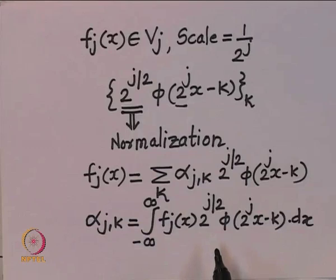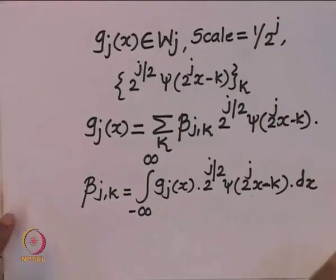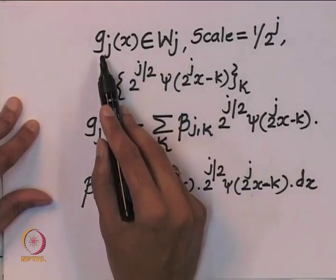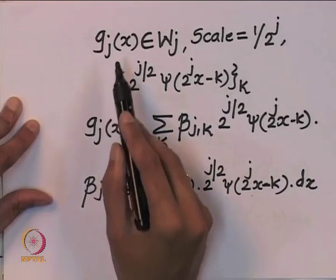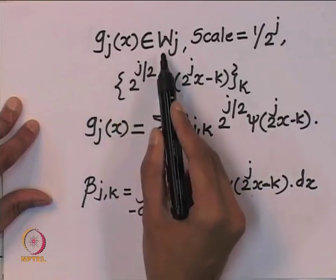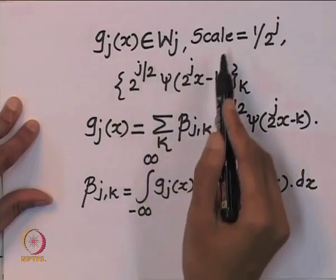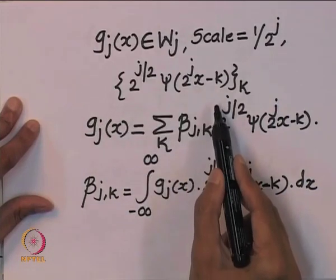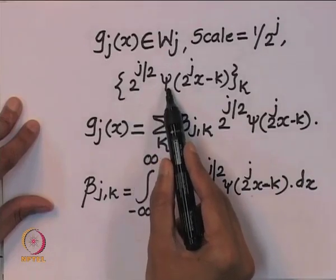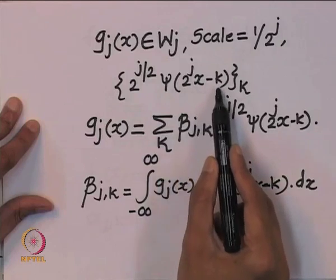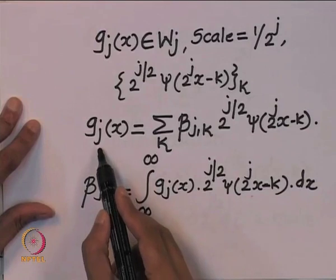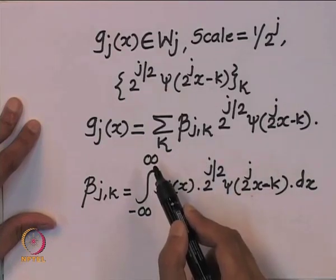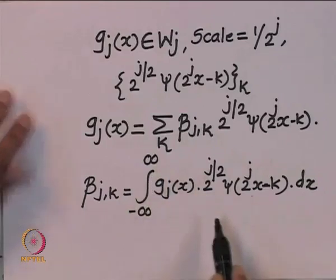We also looked at the framework for finding projections in W_z subspaces. Functions g_z(x) belonging to W_z can be spanned using orthonormal basis functions 2^(z/2) ψ(2^z x − k), where ψ is the wavelet function and k is the translation parameter. I can write g_z(x) as a sum where beta_{z,k} are the details present in the underlying signal, calculated via the corresponding inner product formula.